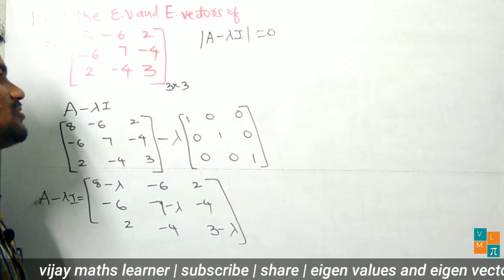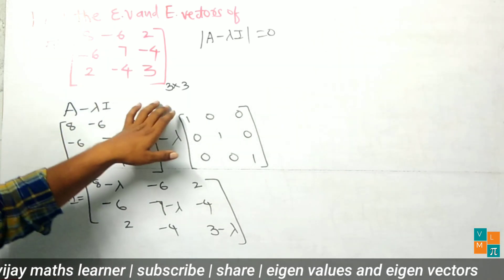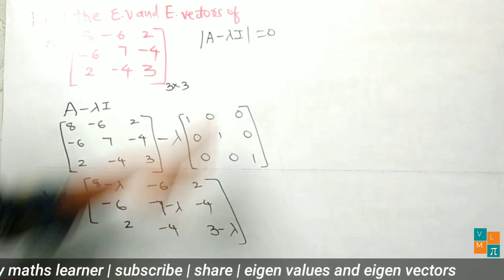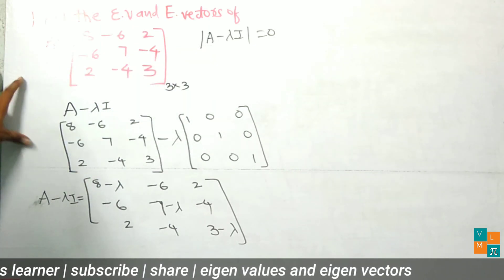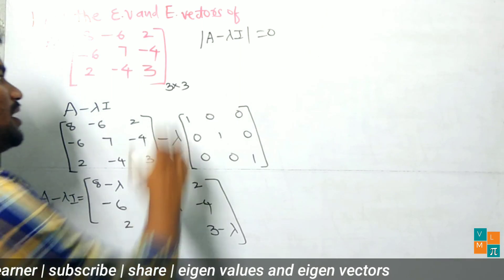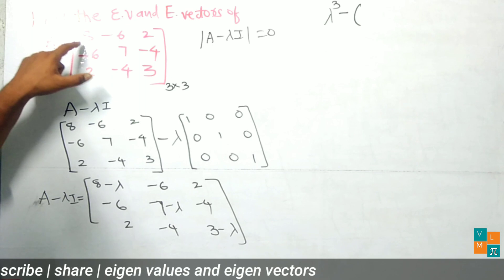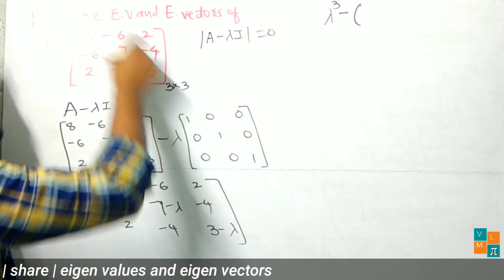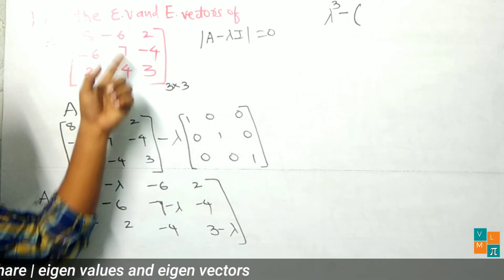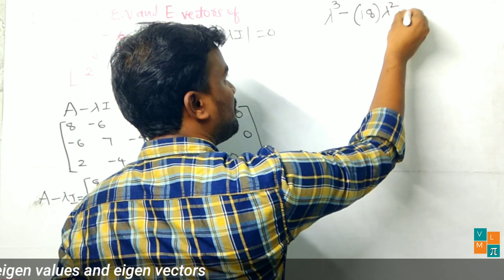Since it is a 3 by 3 matrix, we get a third-degree characteristic equation. The standard method takes too much time, so here we use a shortcut. The characteristic equation is lambda cubed minus the sum of diagonal entries times lambda squared plus the next term. The diagonal entries are 8, 7, and 3, and their sum is 8 plus 7 plus 3 equals 18, giving minus 18 lambda squared.